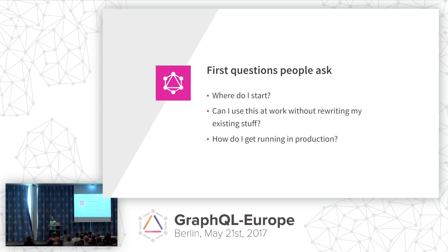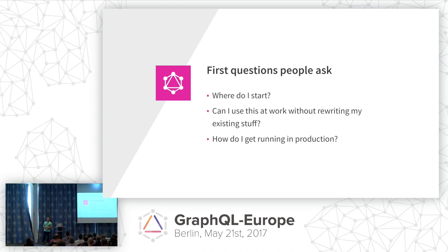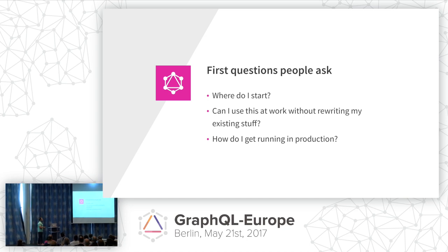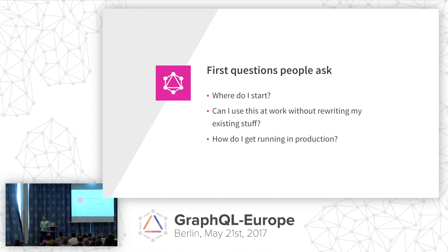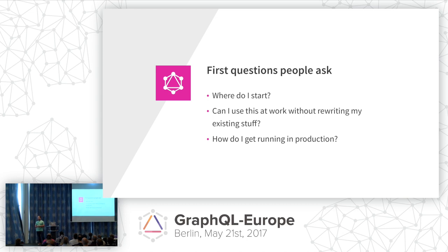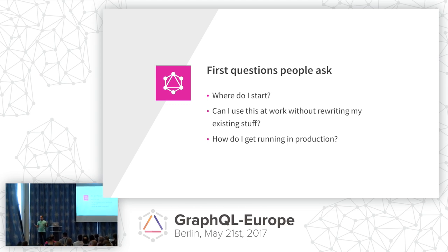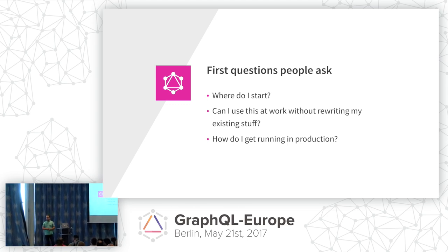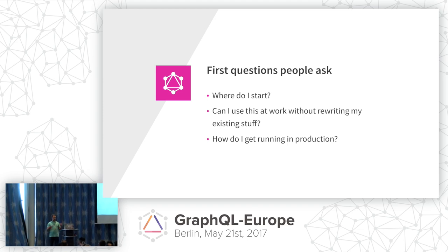What are the questions people first ask when they discover GraphQL? They ask: where do I start? Can I use this at work? Do I have to rewrite all of my stuff? Because it's such a big change, it's such a different technology. And how do I get it running in production? I know how to implement a basic prototype, I can sign up for the GraphQL console. But what if I want to use it on top of my enterprise OData SOAP stack? Because that's something people have to do in their daily life.